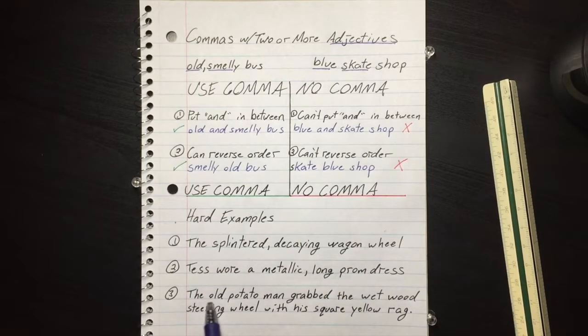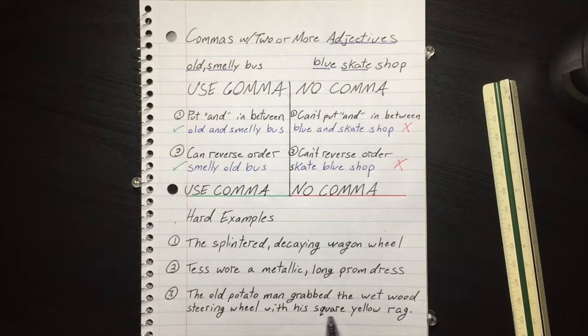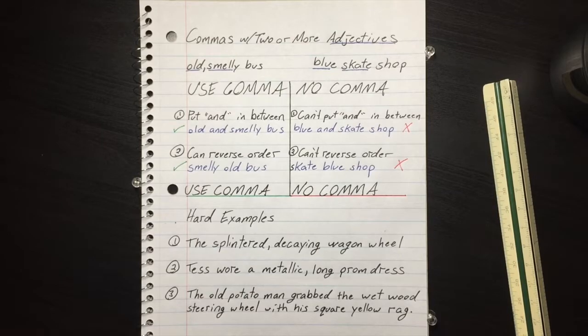Here's a third example. The old potato man grabbed the wet wood steering wheel with his square yellow rag. There are seven adjectives in that sentence.